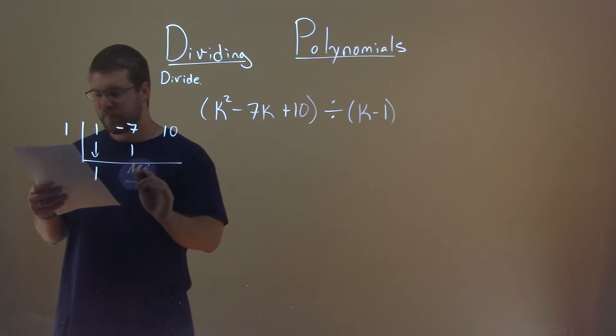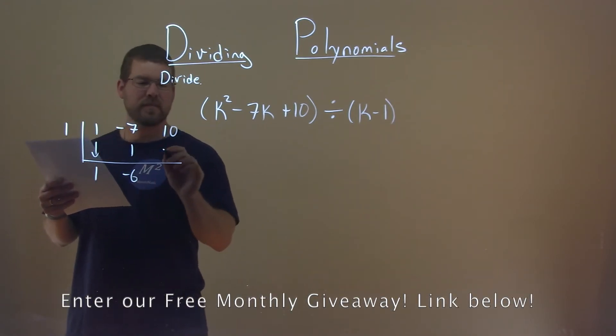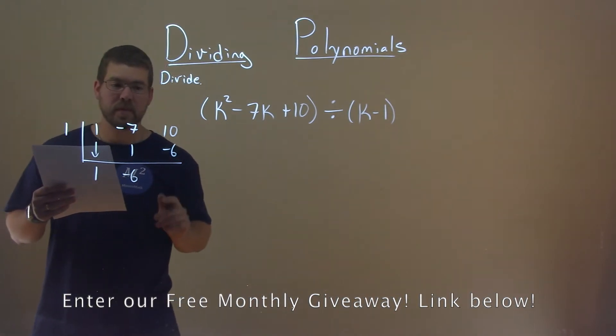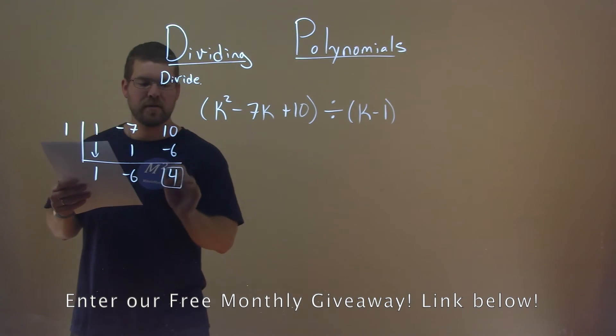Negative 7 plus 1 is a negative 6. And now, 1 times a negative 6 is a negative 6 here. 10 plus a negative 6 is a positive 4, and there is our remainder.